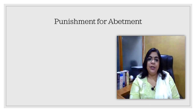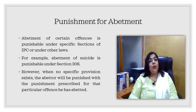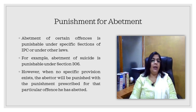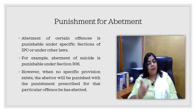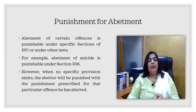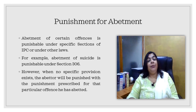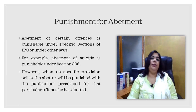Next is punishment for abatement. As far as punishment is concerned, abatement is the only type of crime for which a specific punishment is not mentioned anywhere in IPC, except in section 306 for abatement of suicide. Otherwise, it depends upon the type or form of crime. If there is abatement for theft, the punishment will be related to theft; if for murder, the punishment will be related to murder. So it depends upon the type of offense and the sort of abatement that has been done.